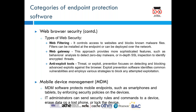Related to web browser security, there are different types: web filtering, gateway, and anti-exploit tools. Web filtering blocks infected pages. Gateway provides more sophisticated features such as behavioral analysis to detect zero-day malware and in-depth secure service layer inspection to identify encrypted threats. Anti-exploit tools are for preventing, detecting, and blocking advanced exploit attacks on the web browser.